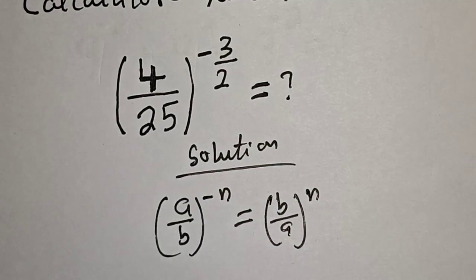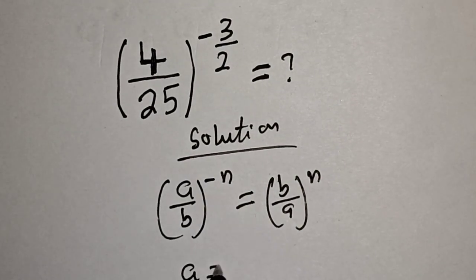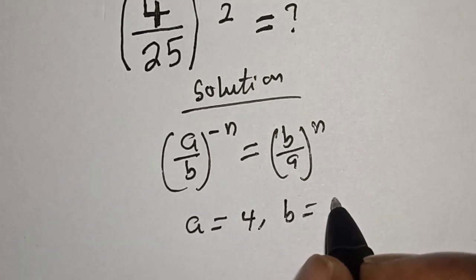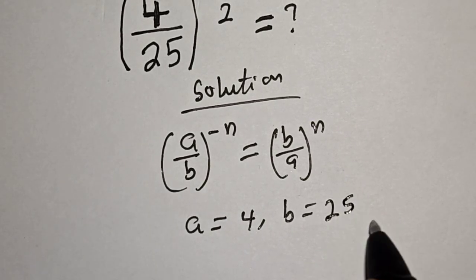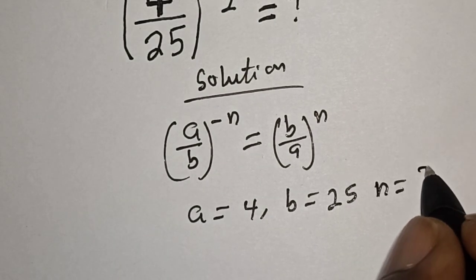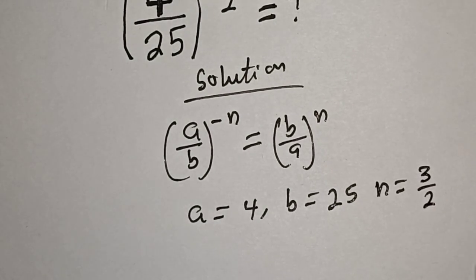Then, in this case, a is equal to 4, b is equal to 25, and n is equal to 3 over 2.